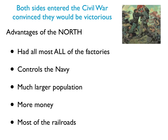The North also had advantages. It had almost all the factories. The North controlled the Navy — whether sailors or officers, they were almost always Northerners. The North had a much larger population from which to get its soldiers, so it could have a larger army. And the North had almost all the money. There was a lot of cotton in the South, but not a lot of money — you had to sell the cotton abroad and buy things back. The North had the money, the factories to make things, and the railroads to move troops and supplies from one place to another.